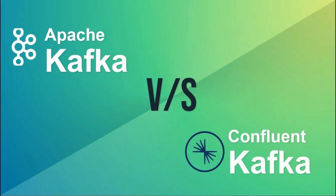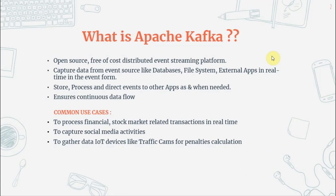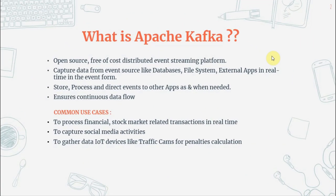What is Apache Kafka? It is an open-source, free, distributed event streaming platform. Event streaming means capturing data in real time from event sources like databases, sensors, file systems, and external applications in the form of event streams — storing and processing them in real time, and directing them to other applications or systems as needed.